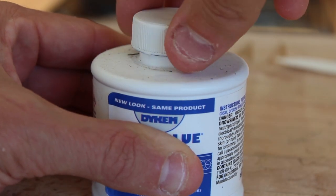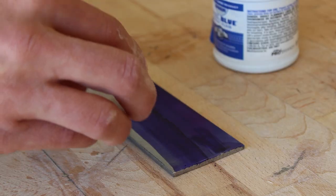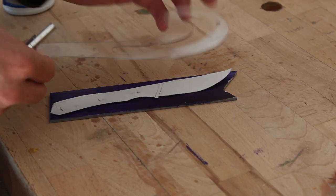For this knife, I'll be using 1075 high carbon steel. To start off, I will coat the steel in layout fluid and then I'll scribe the template on.